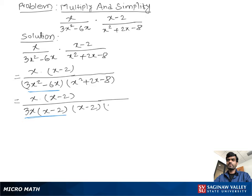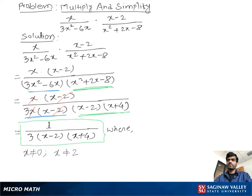Now we see x minus 2, x minus 2 cancel out, x, x cancel out, so we have left 1 over 3 times x minus 2 times x plus 4, where x is not equal to 0 and not equal to 2.